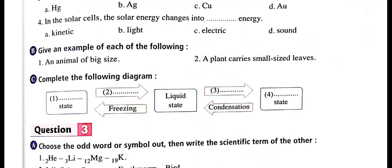Give an example of an animal of big size — maybe rhinoceros or elephant. A plant that carries small-size leaves — we can say molokhia.